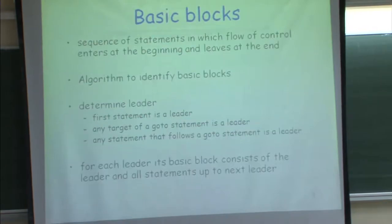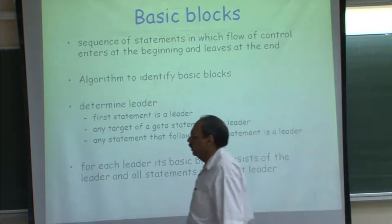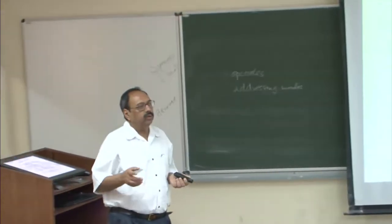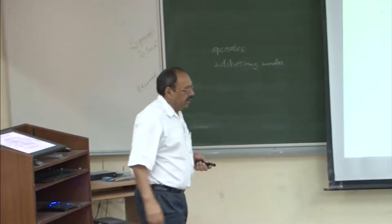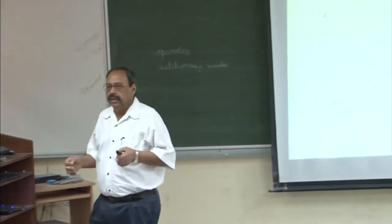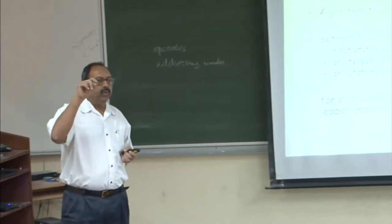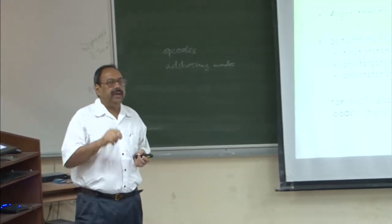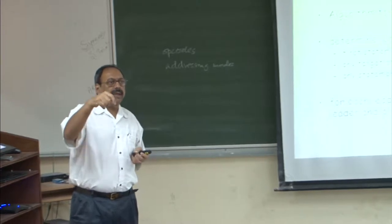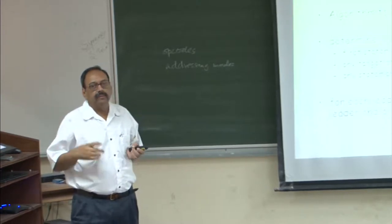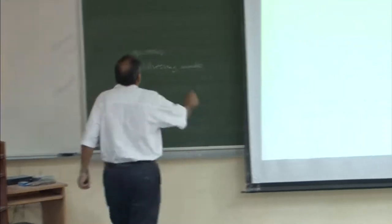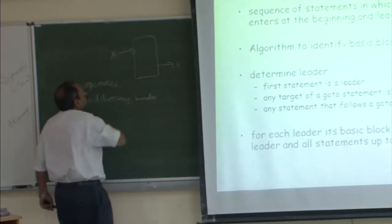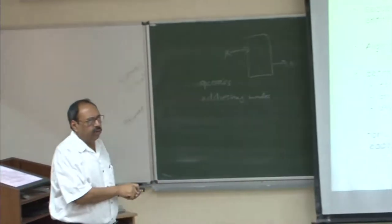This is our machine model. Now let us start code generation. The first thing is: assuming I have generated three-address code, I want to break it into basic blocks. A basic block is a sequence of three-address code with a single entry and single exit — you can only jump to the first instruction, and once execution begins, all instructions in the block must execute. You can exit by naturally falling through or by an explicit jump statement.